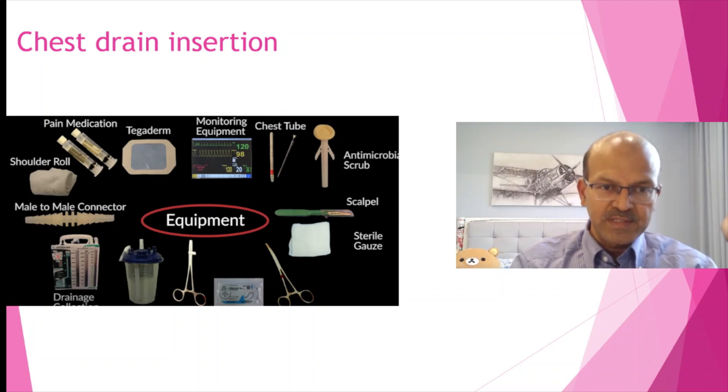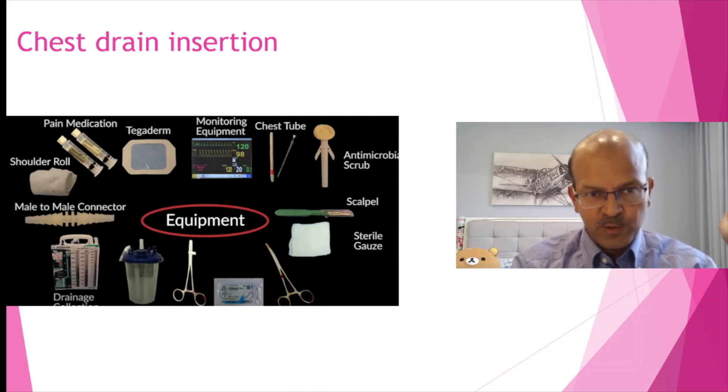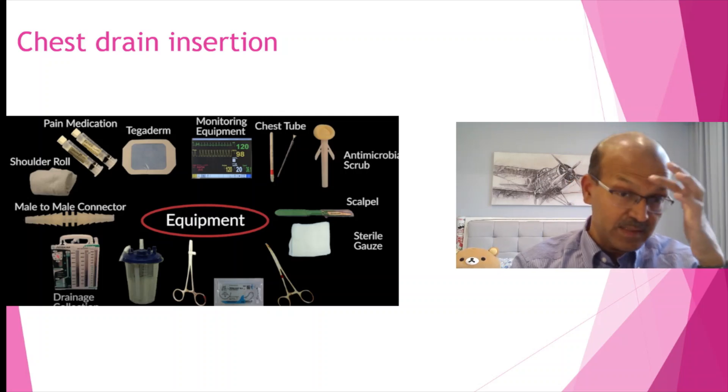The direction of the chest drain should always be going anterior. When you insert the chest drain in, direct it anteriorly. If you are using the artery forceps to direct in, hold it in such a way that the beveled edges up so that it goes anteriorly. A chest drain going posteriorly is one of the reasons why the lung may compress on it and may not drain subsequently.